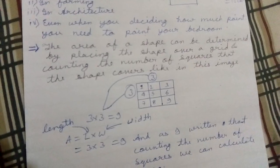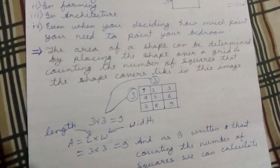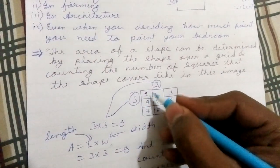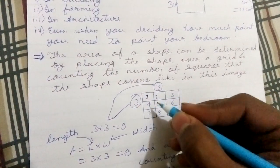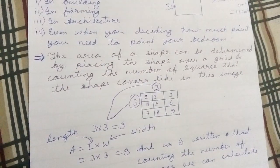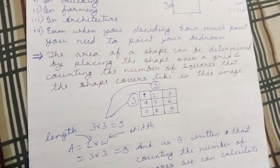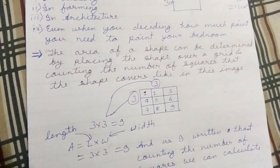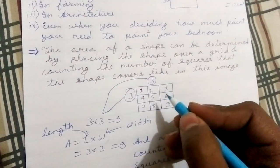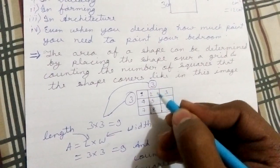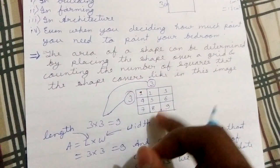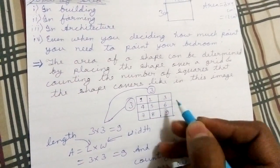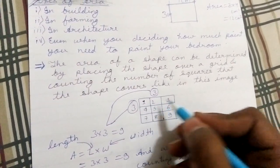The third thing is the area of a shape can be determined by placing the shape over a grid. You know what a grid is - these blocks, these columns, these rows are a grid. And counting the number of squares the shape covers, like in this image.